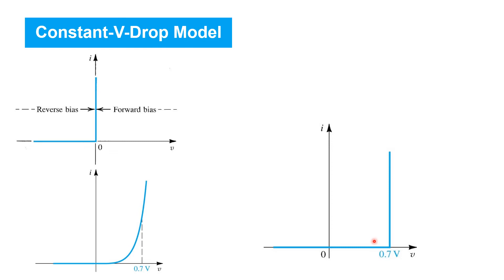That's because the IV characteristic in the accurate exponential model rises so steeply that, as we've seen, over a couple decades variation in current we only expect the forward voltage to vary by about plus or minus 50 or 60 millivolts at room temperature. So the error we incur by just assuming this is a constant at 0.7 is relatively small.